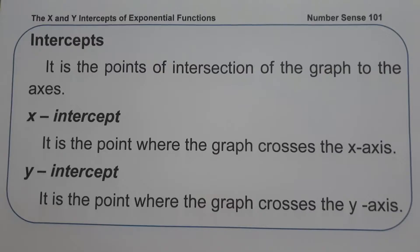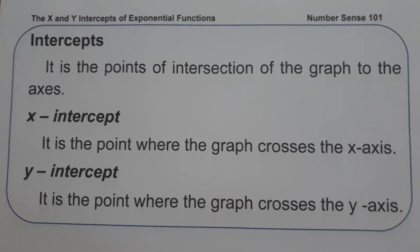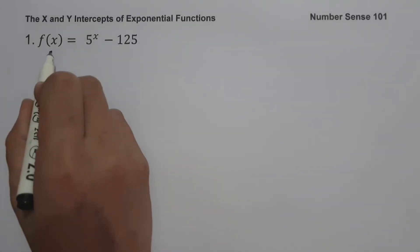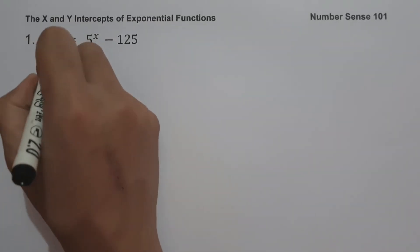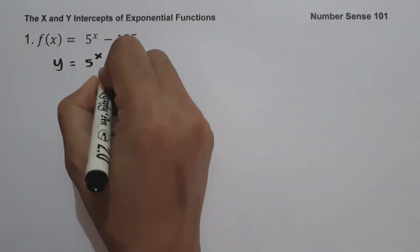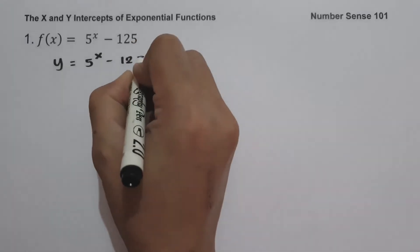These are the basic concepts we need to remember in order to find the x and y-intercepts of exponential functions. Let's start with example number one: f(x) equals 5 raised to x minus 125. The first step is to change f(x) into y, so we have y equals 5 raised to x minus 125.